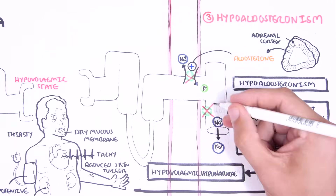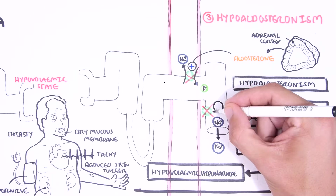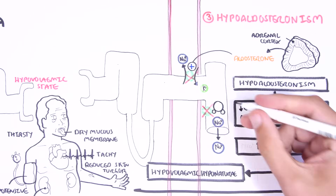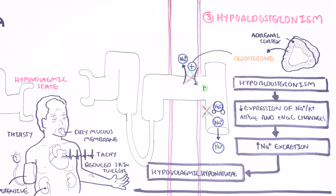Remember, water will follow sodium. Diuretics, vomiting, and hypoaldosteronism will give you an increase in urine sodium.